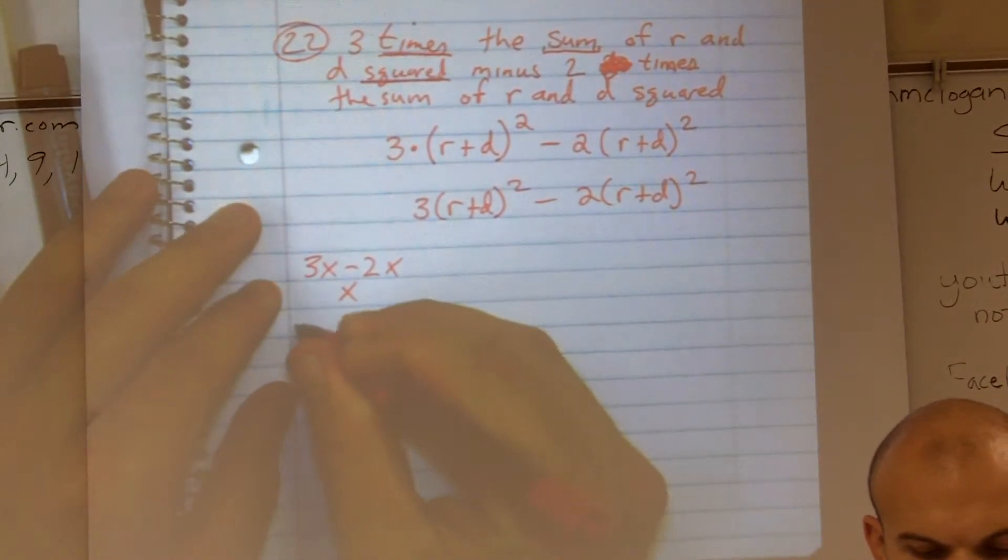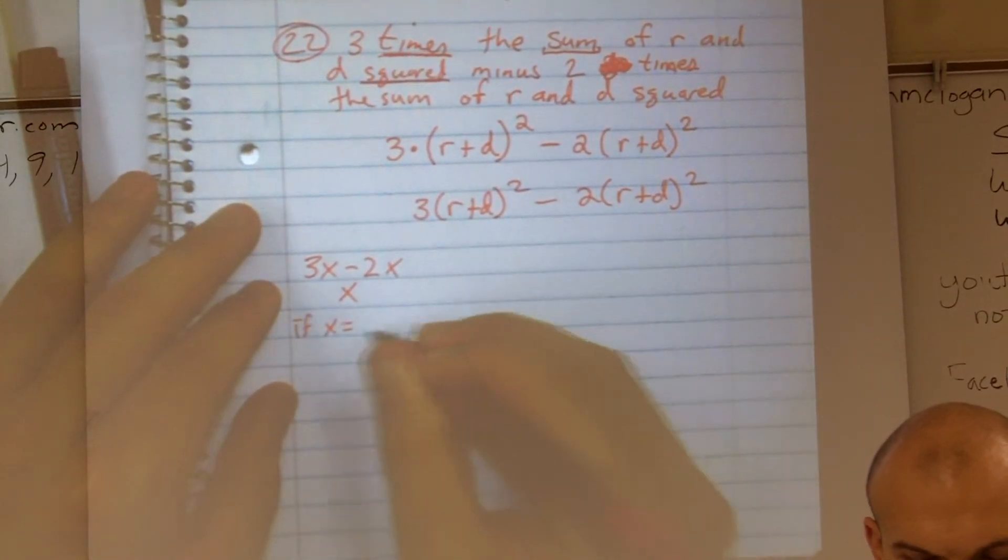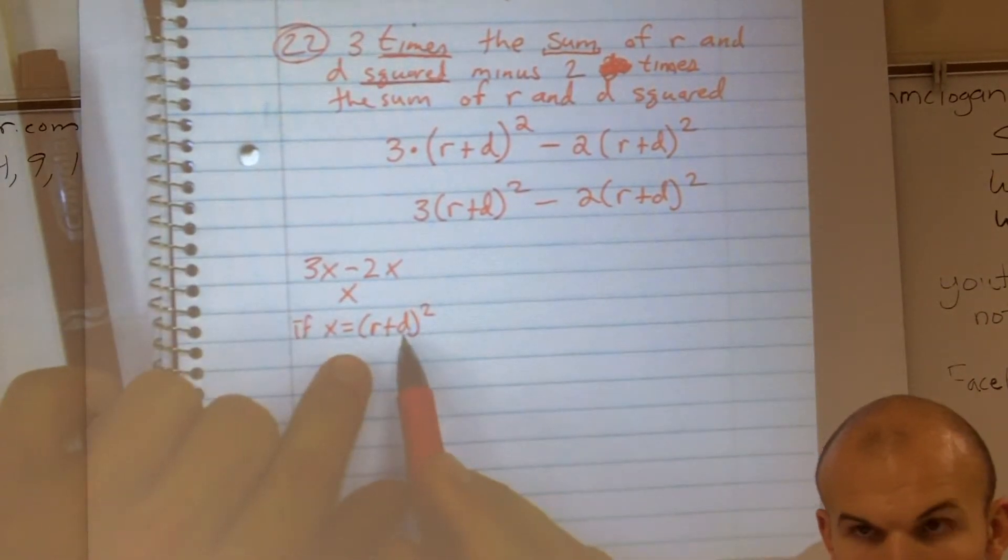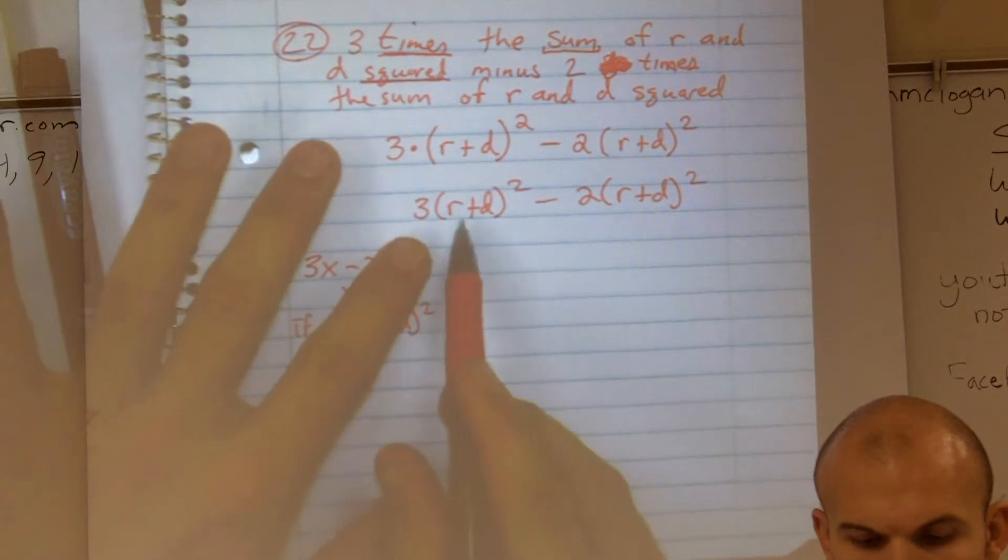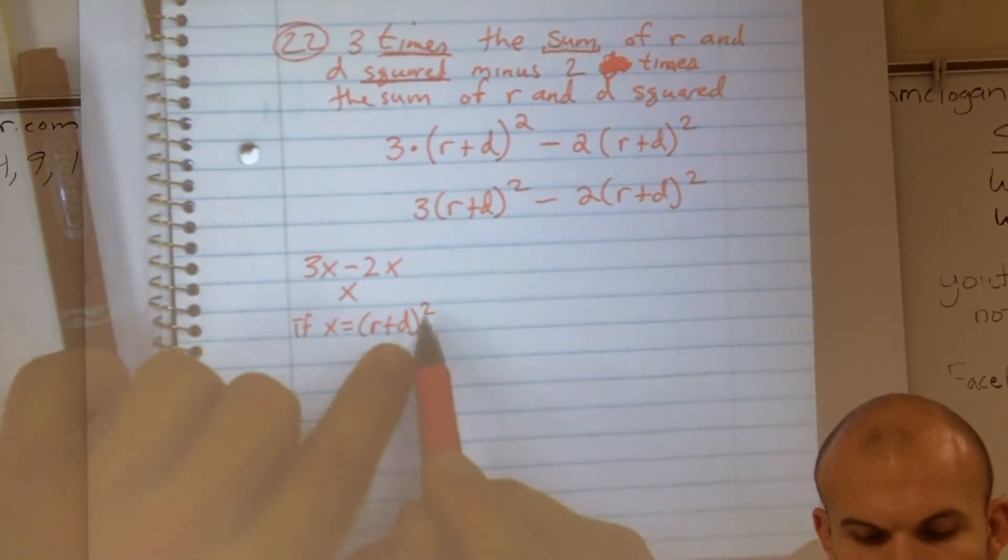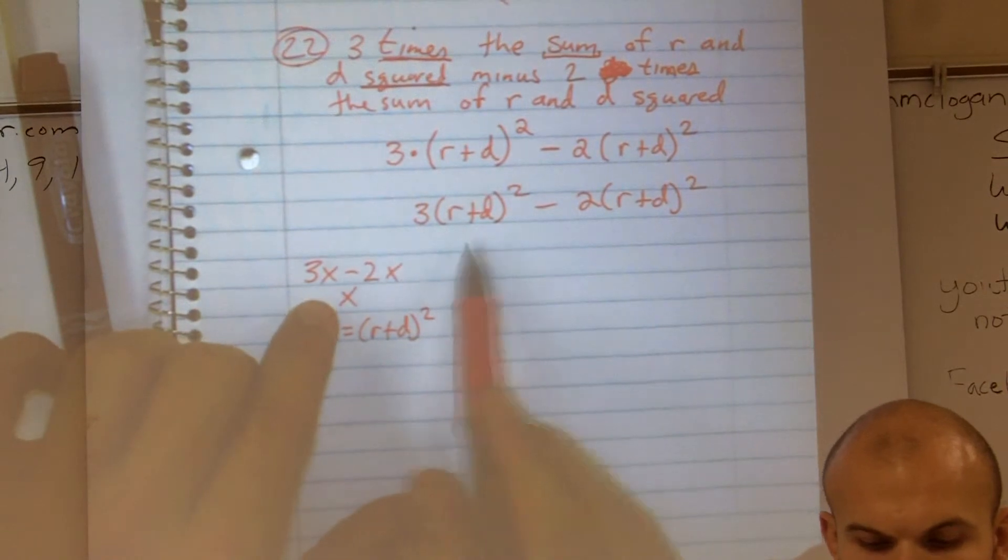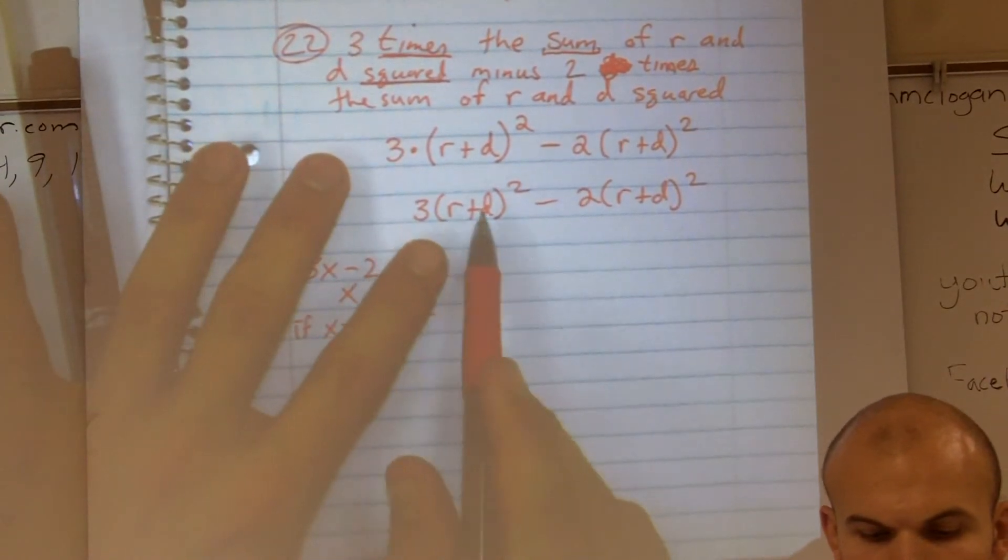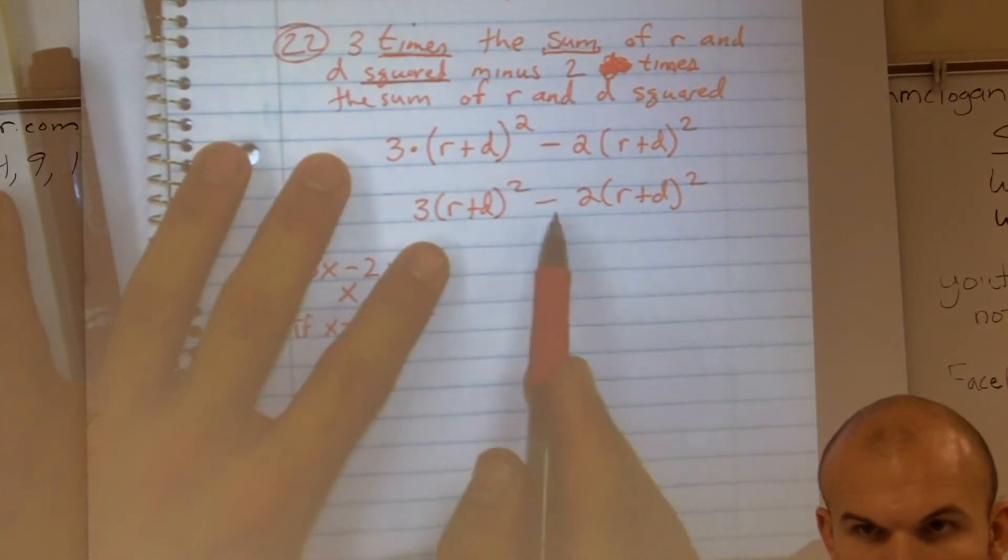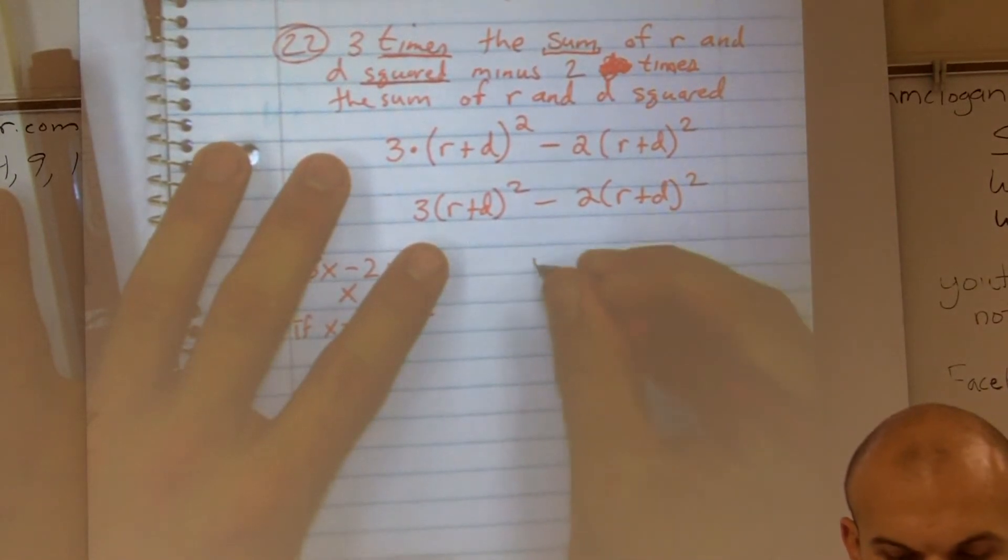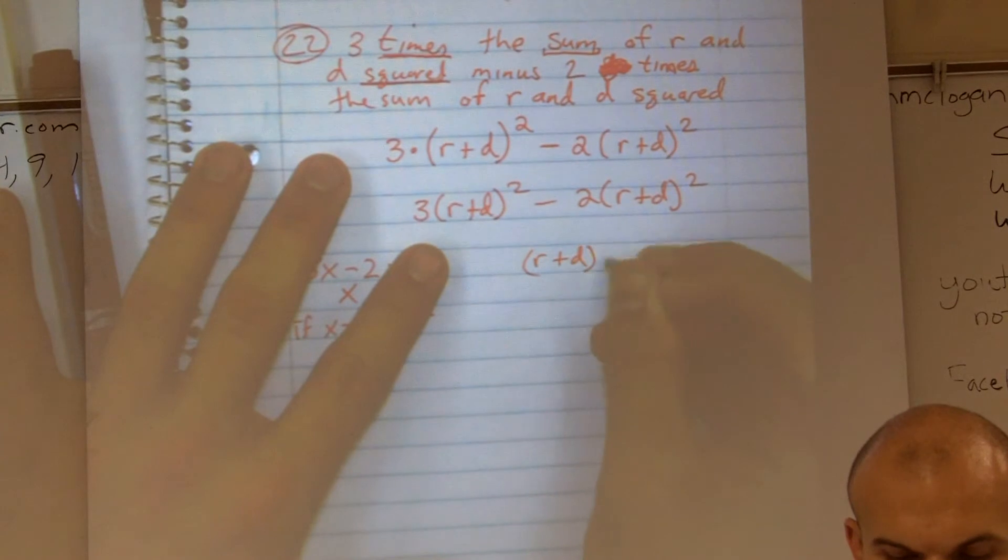What about if X equaled R plus D squared? So if you guys look at this, really all I'm doing is, let's pretend R plus D squared equaled X. So really, my final answer is going to be, well, if I have three R plus D squareds minus two R plus D squareds, I'm only going to be left with one R plus D squared.